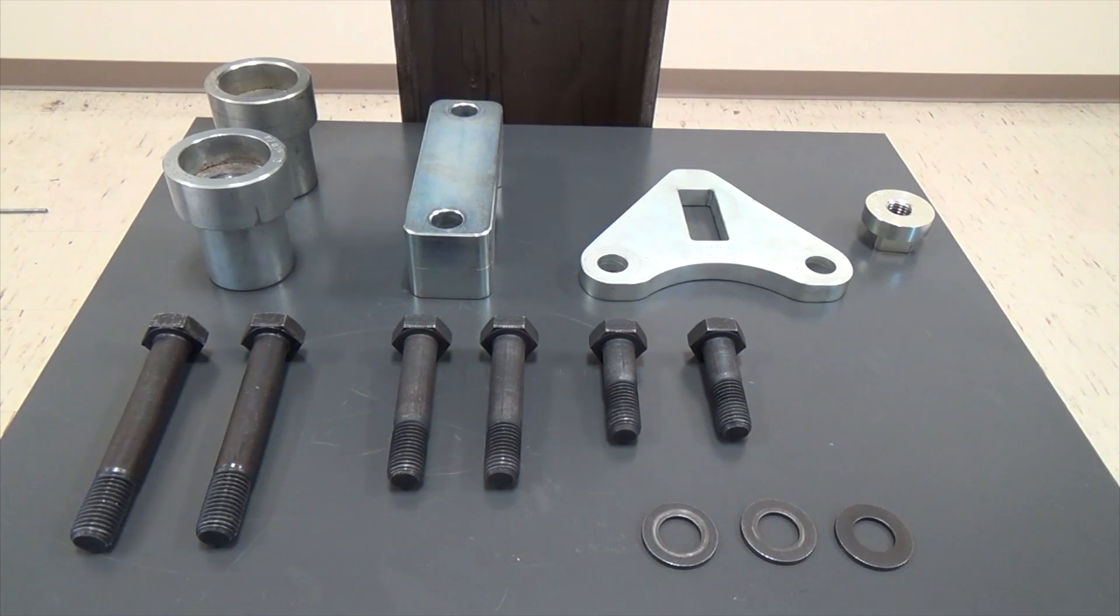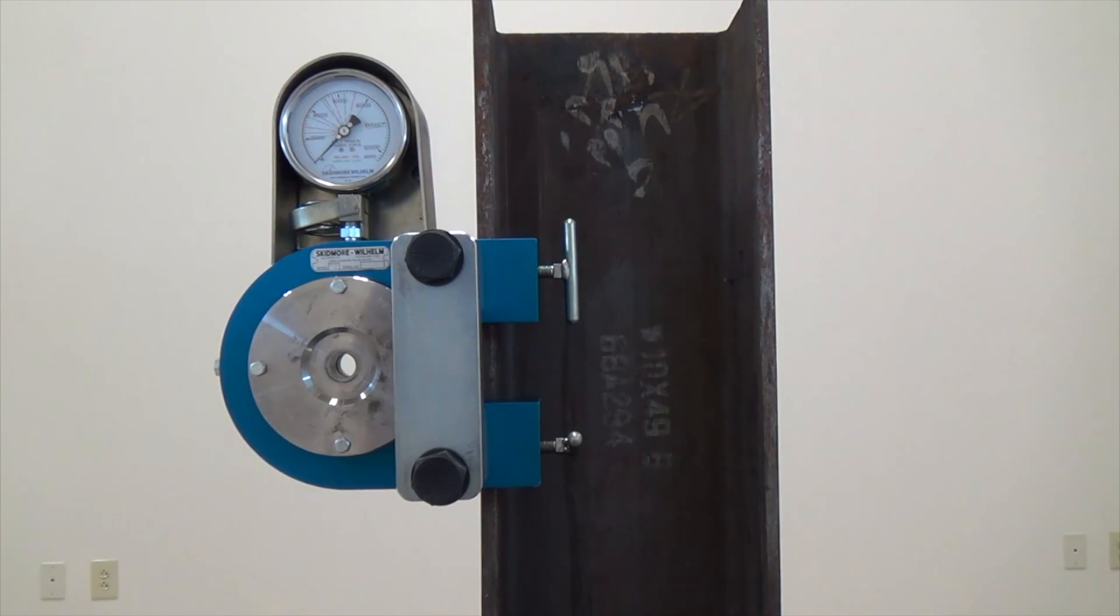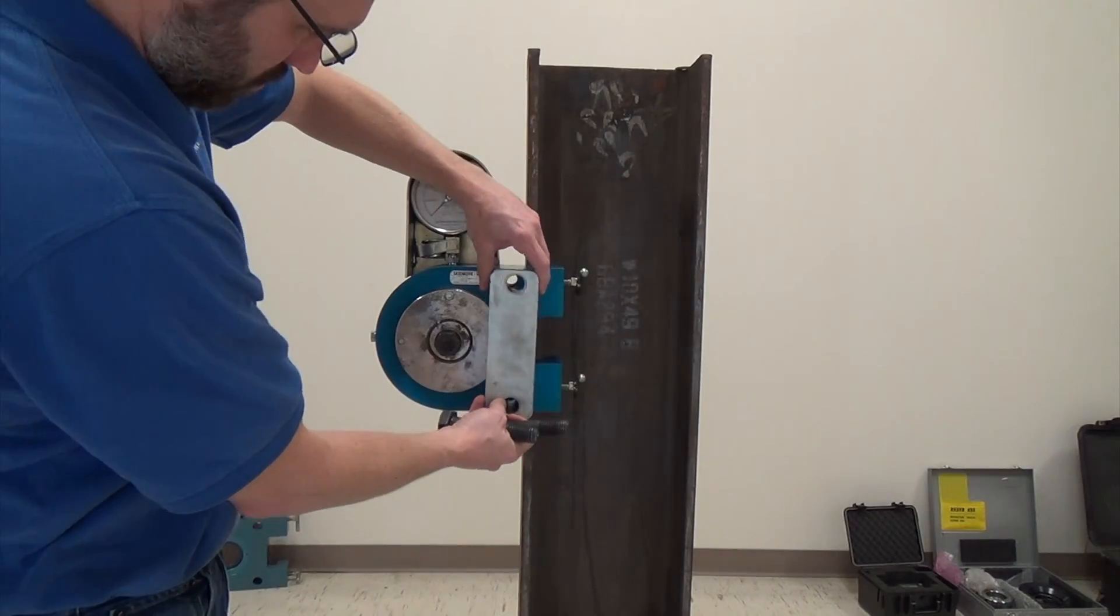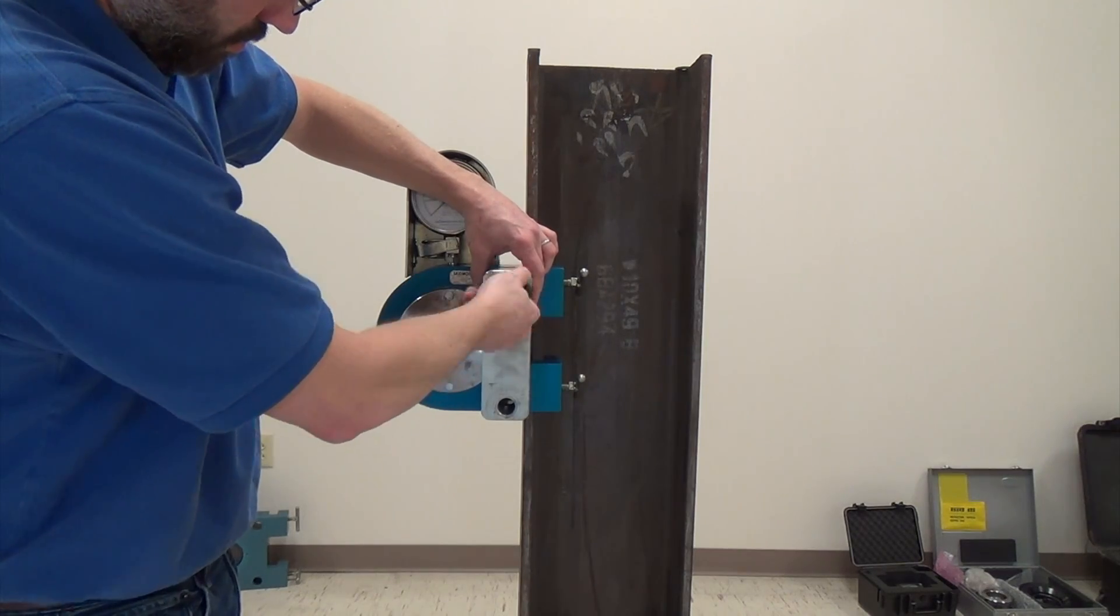Skidmore torque reaction kits offer a variety of solutions to accommodate different sizes and lengths of reaction arms. In this case, we are using the bar configuration that works well with the turn of nut gun's shorter reaction arm.